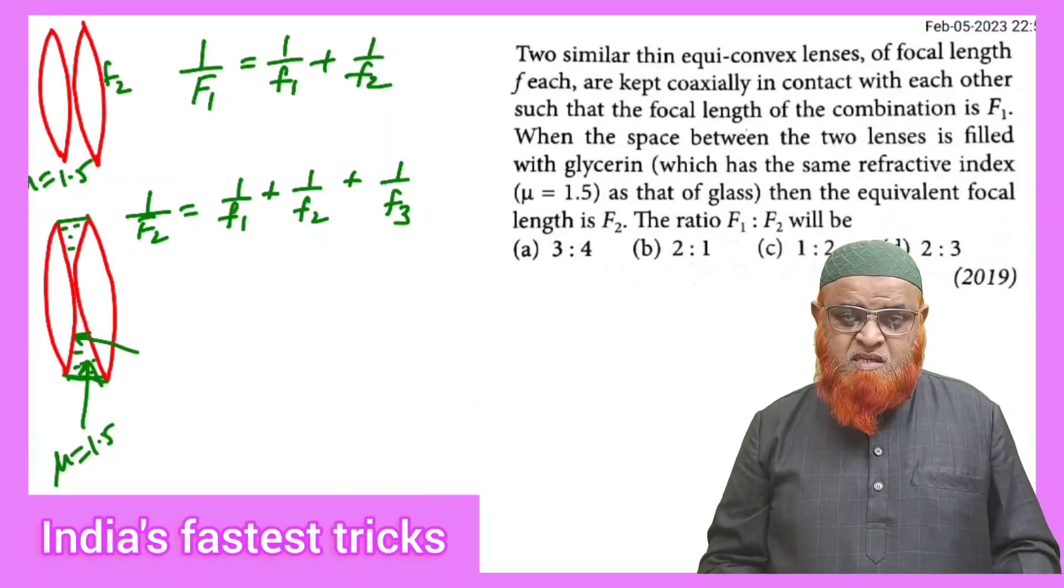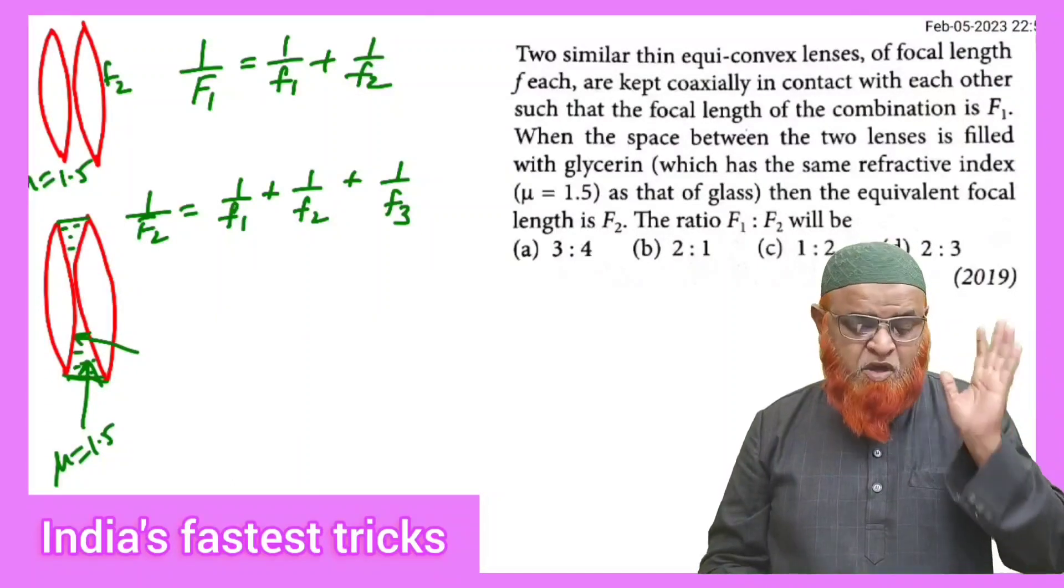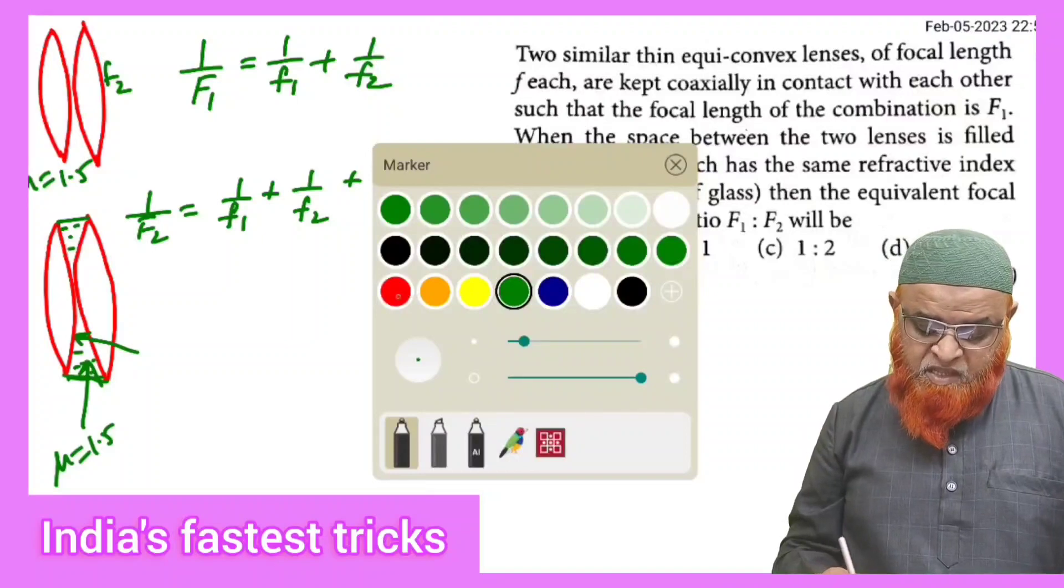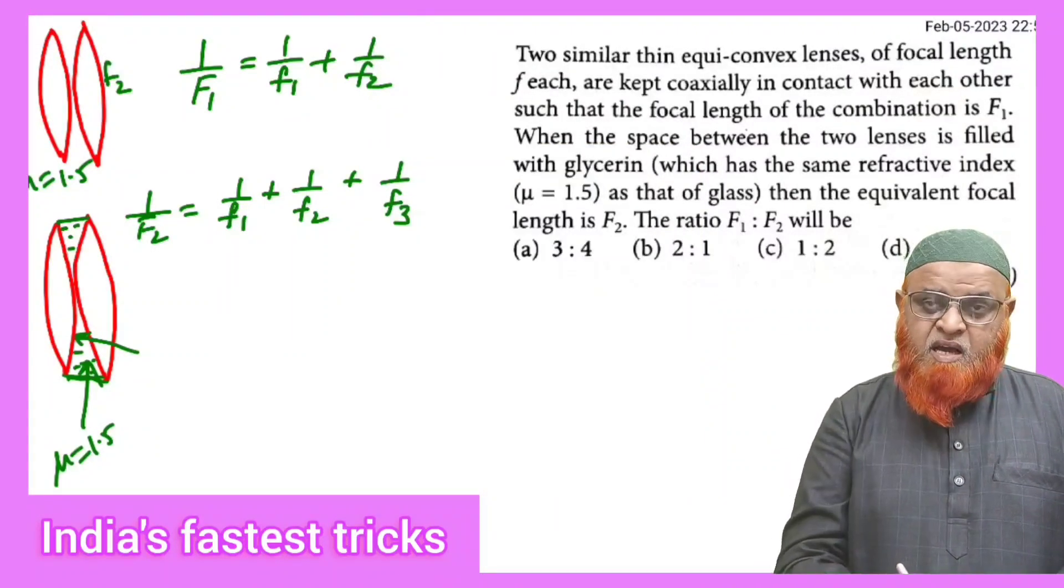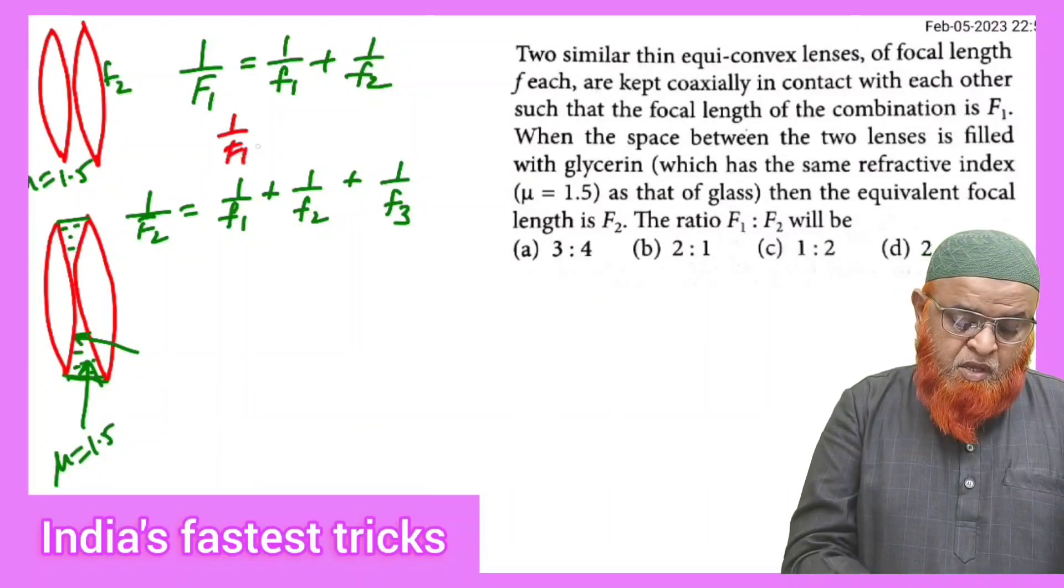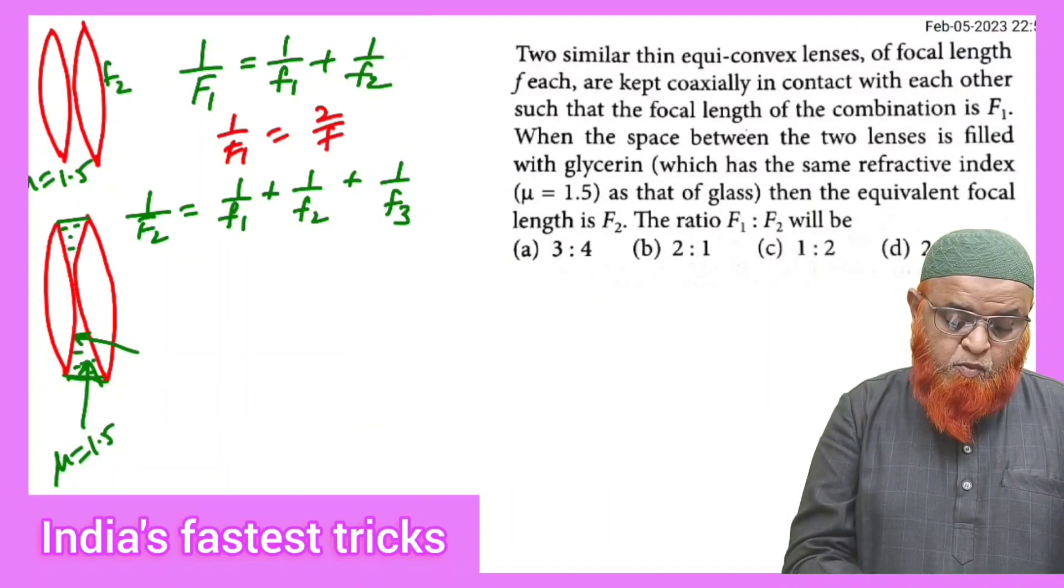So here, as the focal lengths are the same, you can write 1/F1 is equal to 2/f. This implies that F1 is equal to f/2.